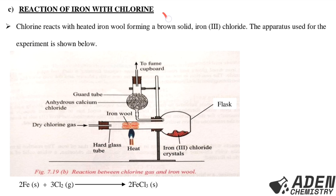Part C: reaction of iron with chlorine. Chlorine reacts with heated iron wool forming a bronze solid, iron(III) chloride, FeCl3. The apparatus uses dry chlorine gas — wet chlorine cannot be used because iron(III) chloride is highly deliquescent and would readily dissolve in wet gas. The precaution is to pass dry chlorine gas through the combustion tube before heating the iron wool, in order to expel all air from the setup and prevent oxidation of iron.